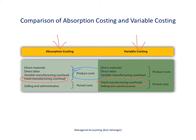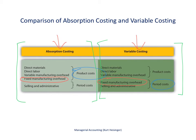Fixed manufacturing overhead costs — same thing as fixed manufacturing costs — are period costs under variable costing, which means they go directly to the income statement as an expense. Under absorption costing, fixed manufacturing overhead costs go into inventory and are considered product costs. All other costs are treated the same under both methods, so it all comes down to how fixed manufacturing costs are treated.